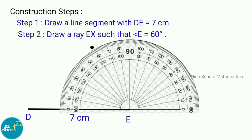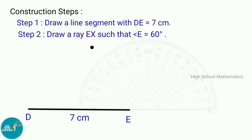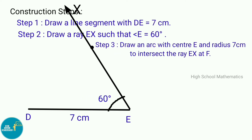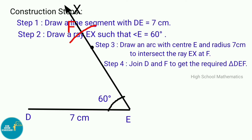Step 3: Draw an arc with center E and radius 7 centimeters to intersect ray EX at F. Step 4: Join D and F to get the required triangle DEF.